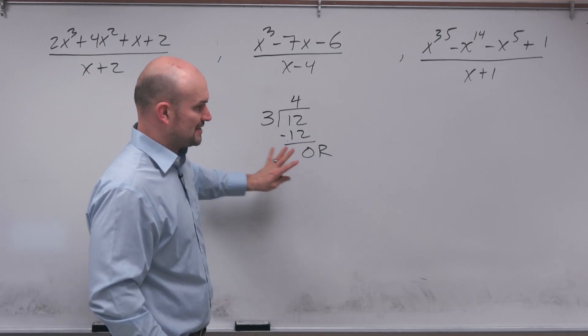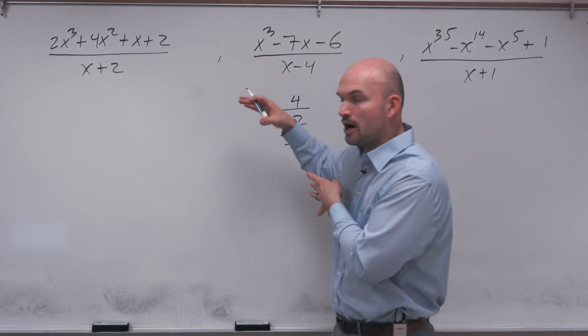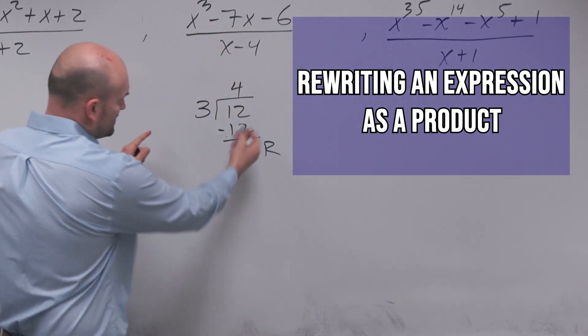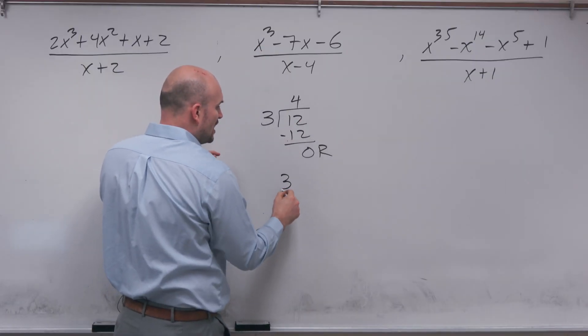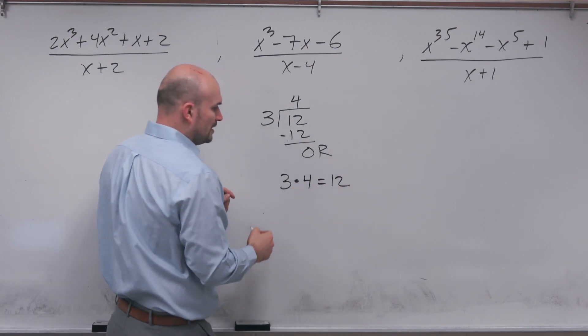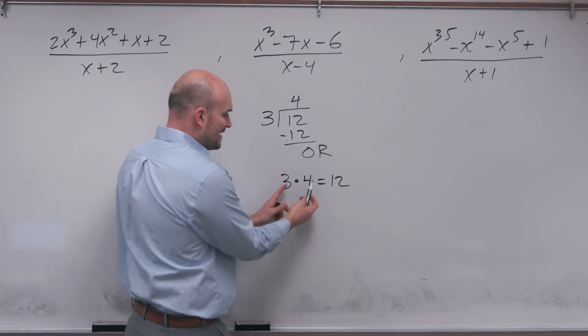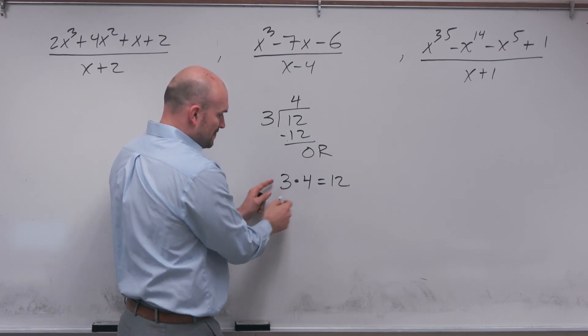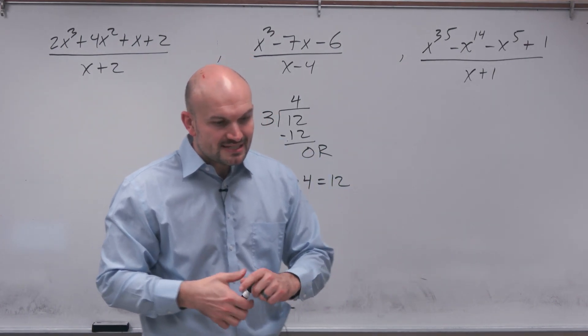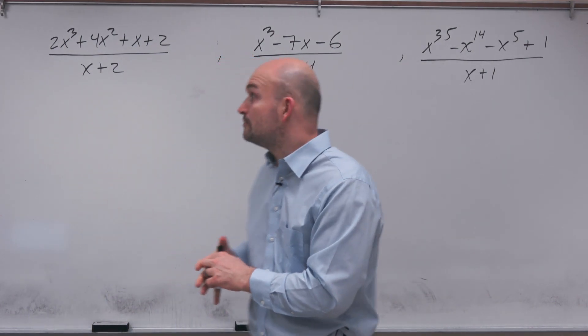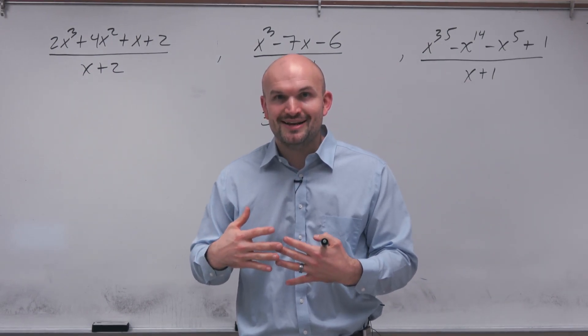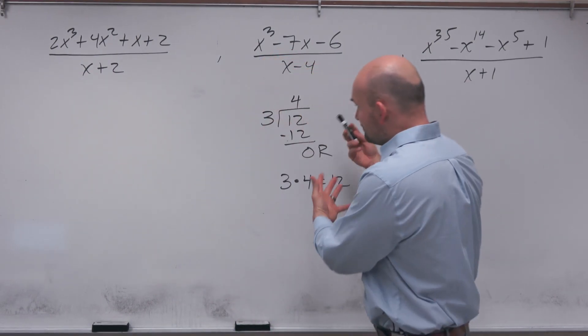Another way we can think about factoring, which extends into our polynomials, is by rewriting an expression as a product. If I have 3 divides into 12 four times, I can also rewrite this as 3 times 4 equals 12. So if you can rewrite 12 as a product of its two factors, then these two are factors of 12. This is something that we start with when dealing with polynomials.